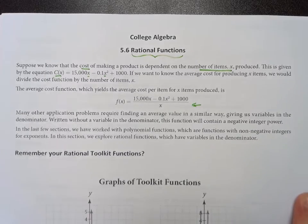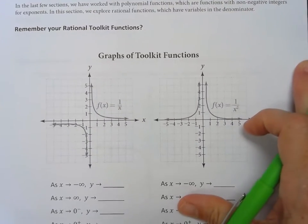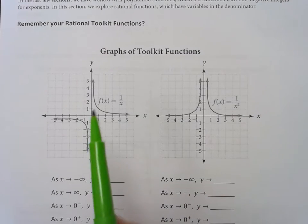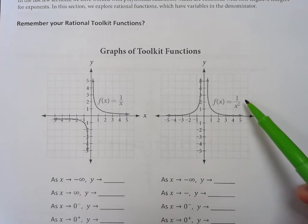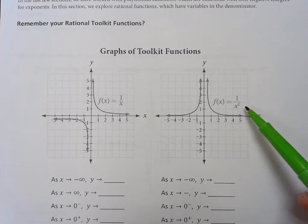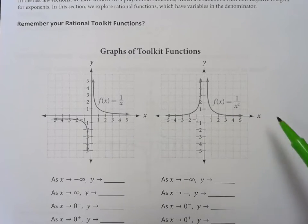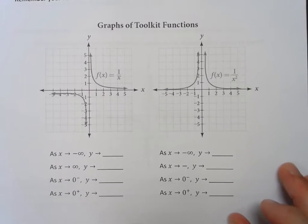So let's go back to our toolkit functions. You remember the 1 over x function looks like this, and then the squared rational function looks like this one. So we have these two pieces in the squared one. Let's review our arrow notation really fast.